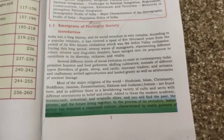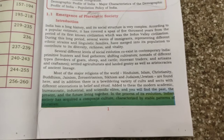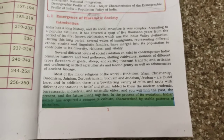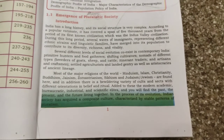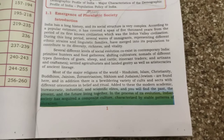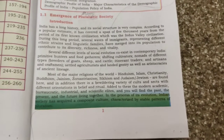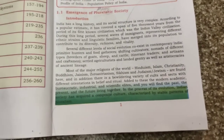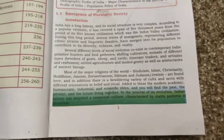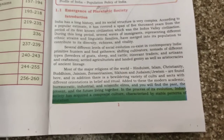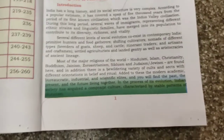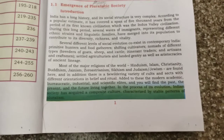Most of the major religions of the world — Hinduism, Islam, Christianity, Buddhism, Jainism, Zoroastrianism, Sikhism, and Judaism — are found here. In addition there are a bewildering variety of cults and sects with different orientations in belief and ritual. India is multilingual, multicultural, and is almost called unity in diversity, meaning we have different types of culture, language, and religion.